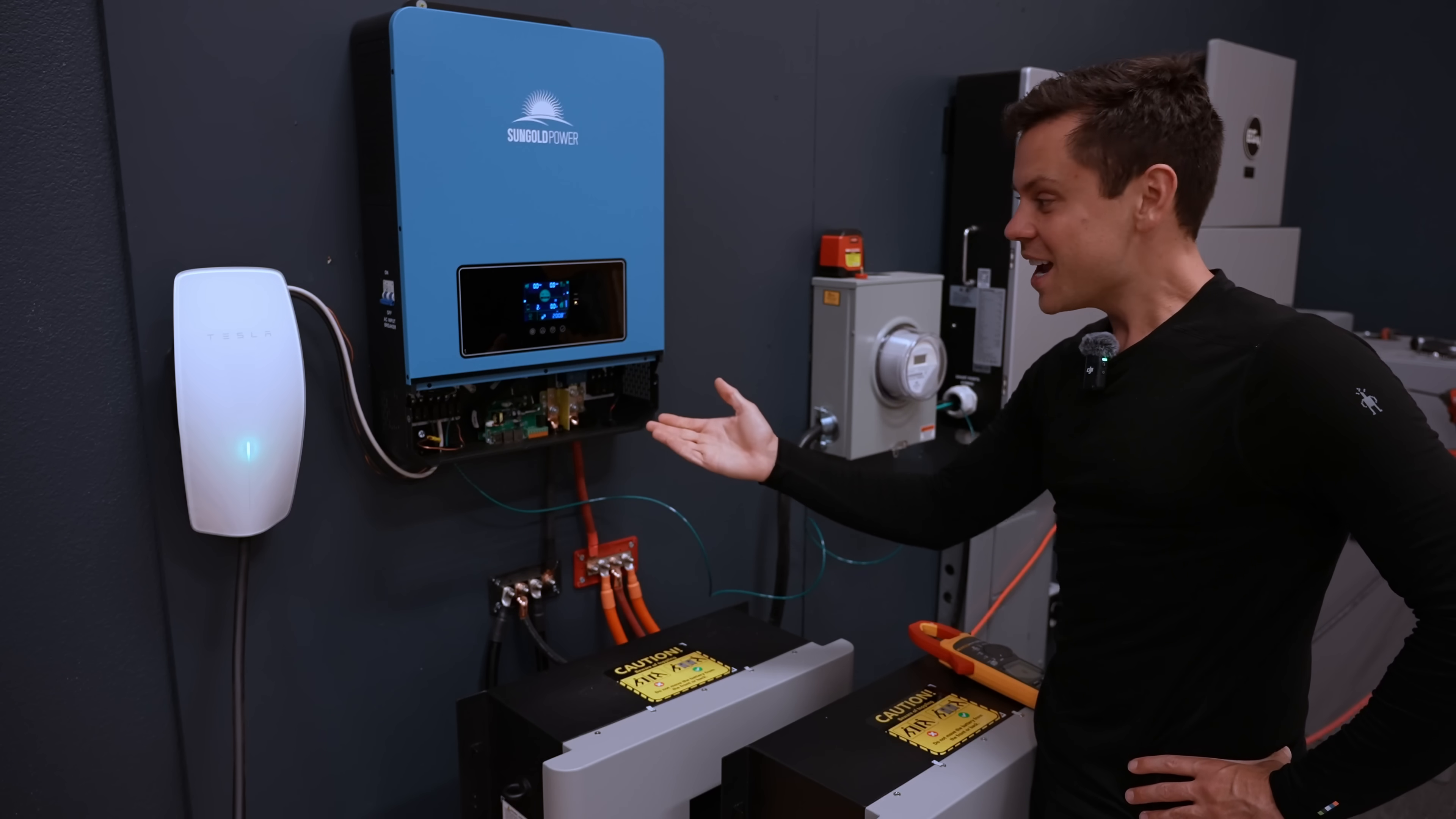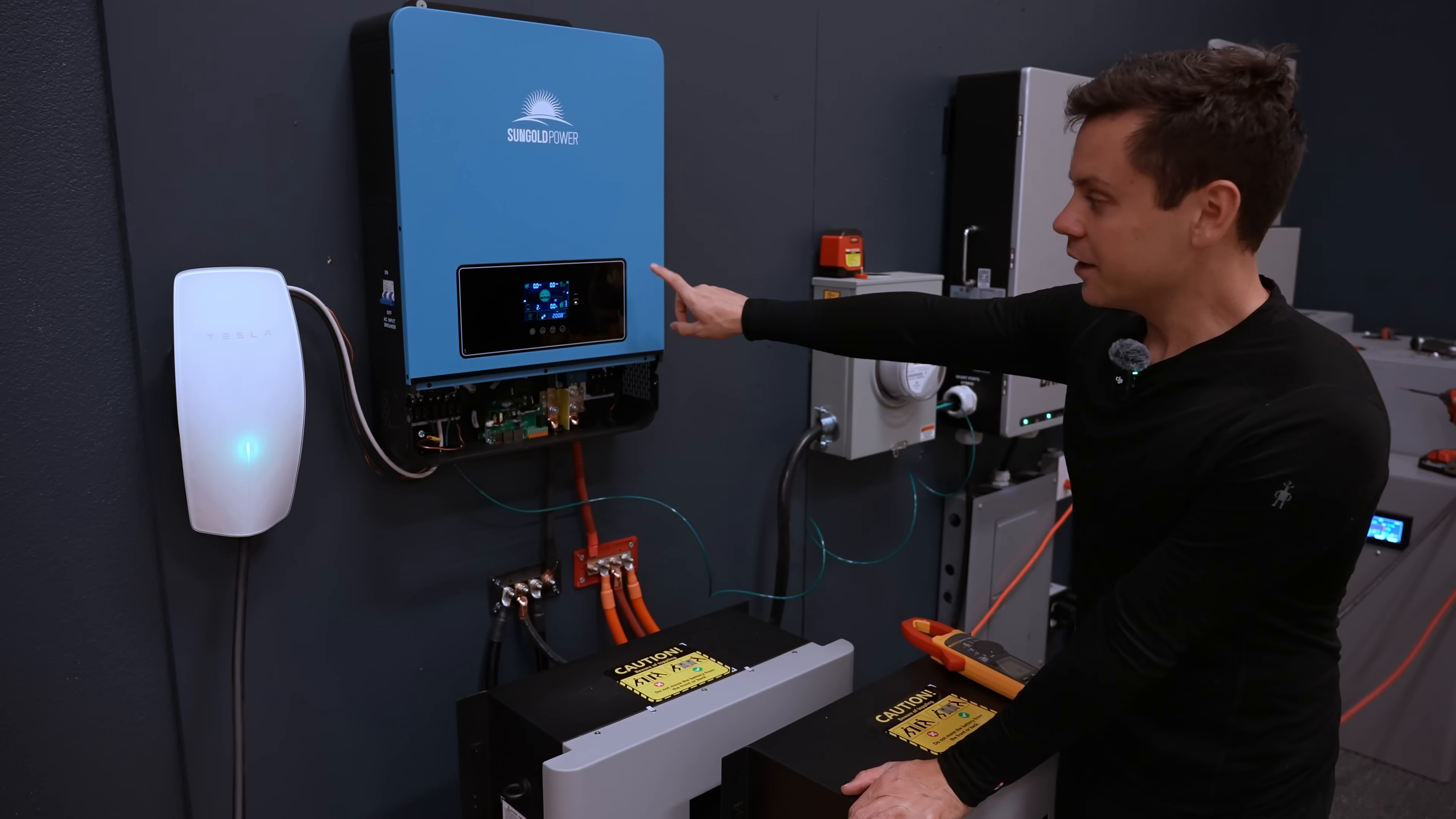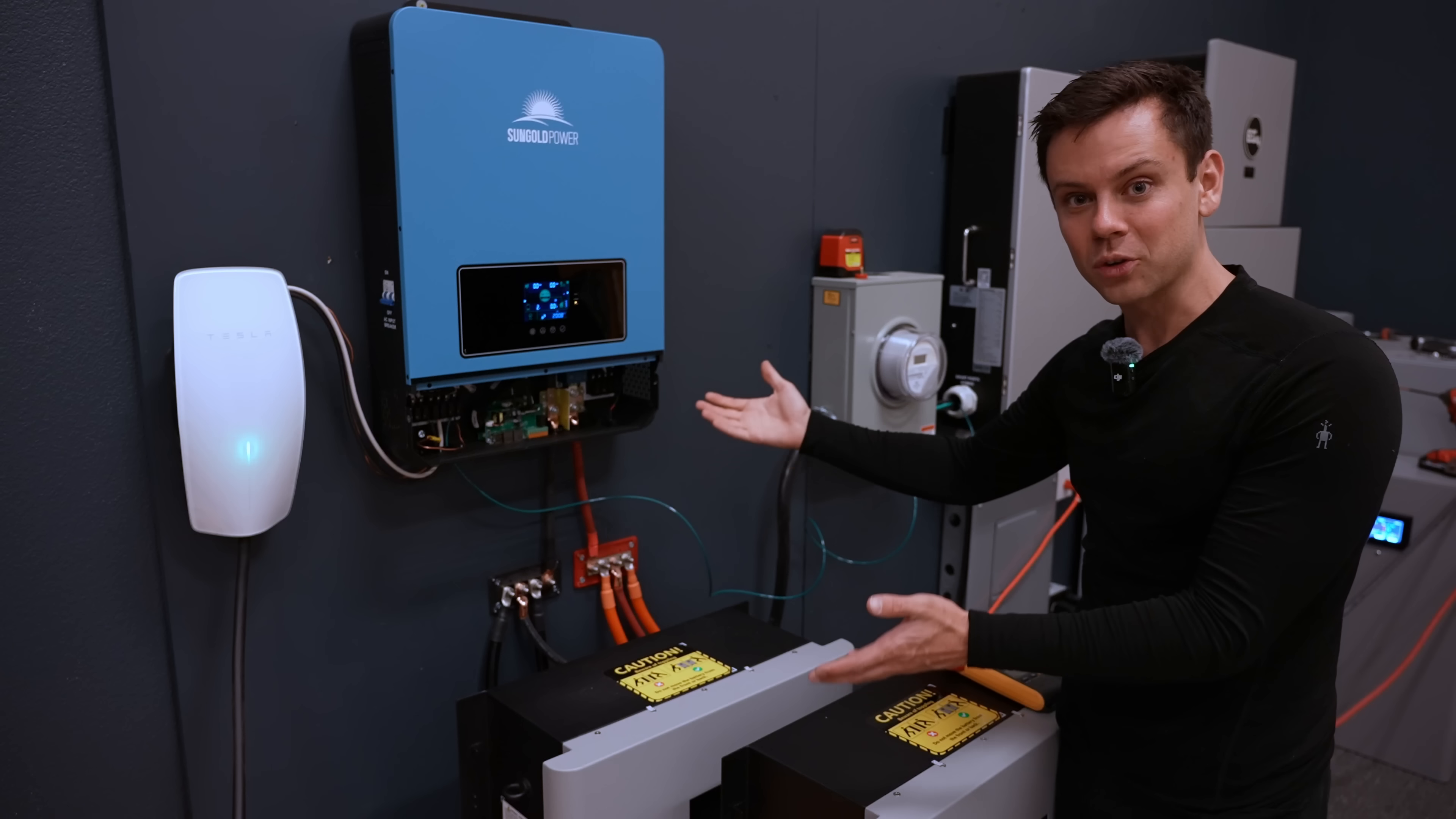10,000 watts. This is the same price as like an EG4 6000 XP but you get almost double the output capacity. If you combine this with the budget server rack batteries like an eco-worthy, you can run an entire house for really cheap.